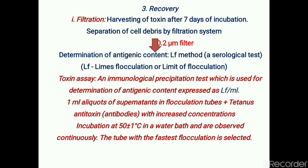In this test, 1 mL aliquot of supernatant of the toxin is taken in flocculation tubes and mixed with standard tetanus anti-toxin antibodies at variable concentrations, with a fixed concentration of the test toxin sample. After incubation at 50°C in a water bath, all tubes are observed continuously for the presence of flocculation. The tube with the fastest flocculation is the indicator tube, and the concentration of toxin in that tube is equivalent to the concentration of that antibody.